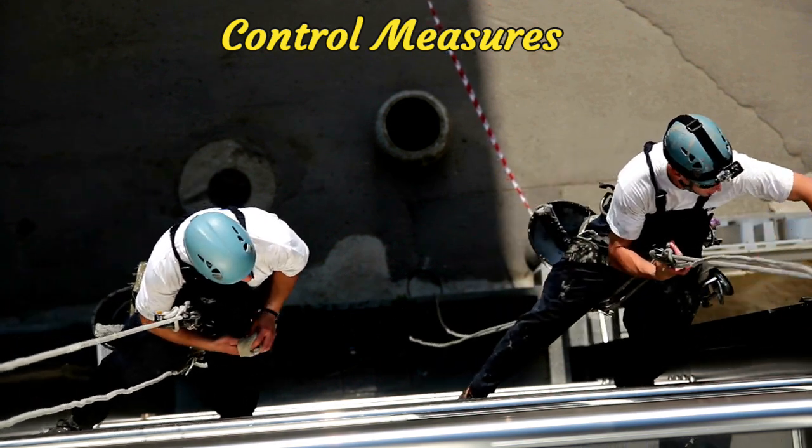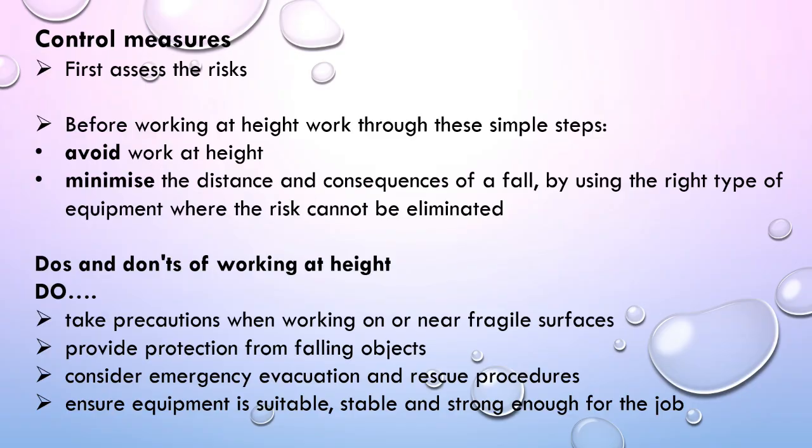For control measures when working at height: first, assess the risk before working at height. Work through these simple steps — avoid work at height where possible, then minimize the distance and consequences of a fall by using the right type of equipment where the risk cannot be eliminated.